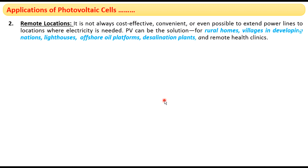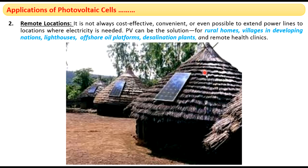Photovoltaic cells are extensively used in remote locations like remote villages and remote homes. As we cannot extend power lines to remote areas — it is costly, inconvenient, and sometimes not possible — photovoltaic cells are the best alternative power sources. For example, in remote villages, thatched houses are fitted with photovoltaic cell solar panels which provide power.